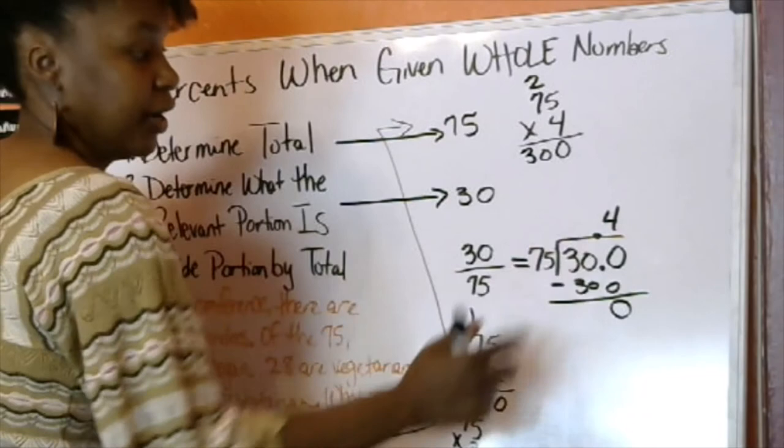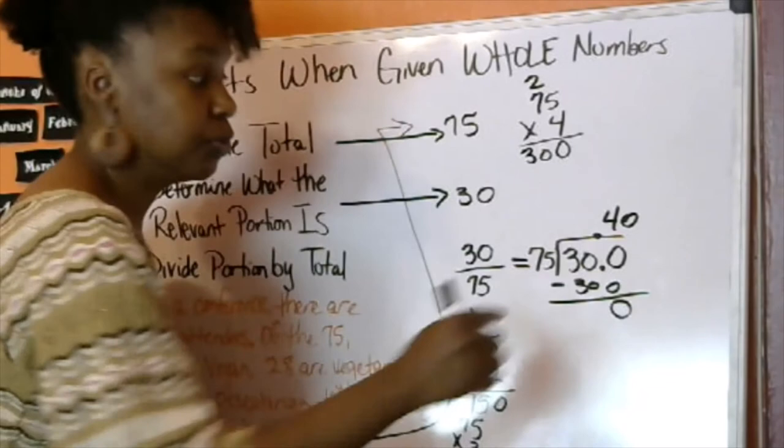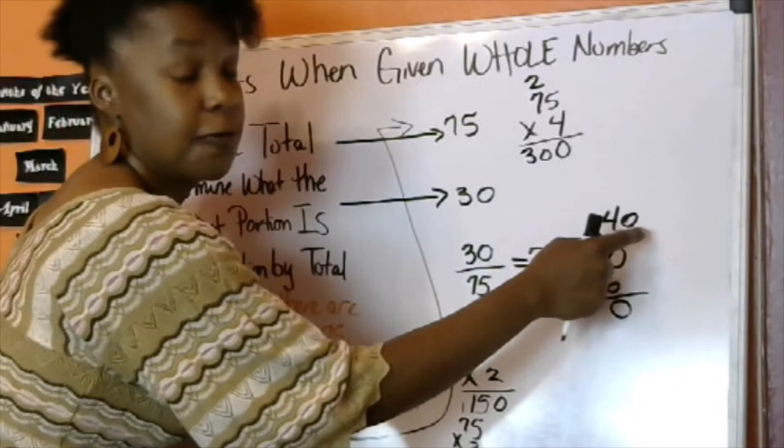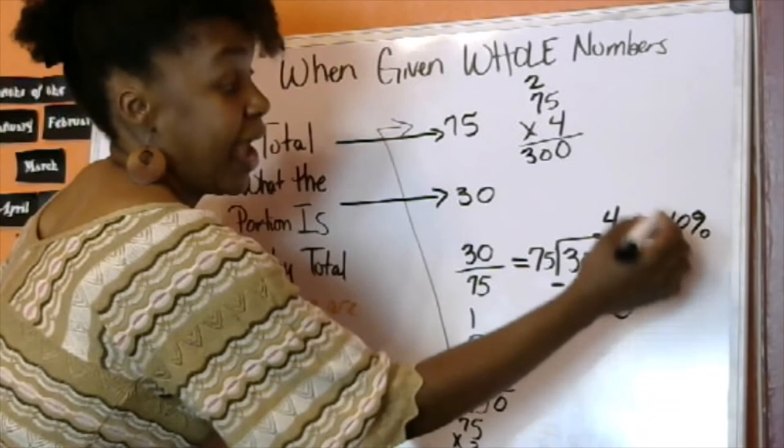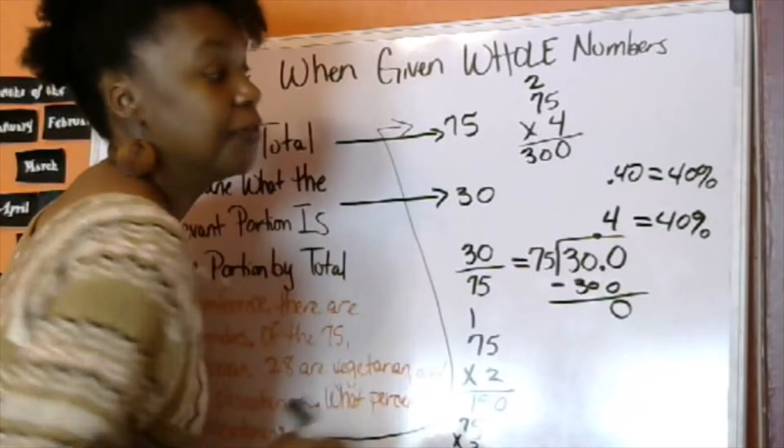You may add a 0 if you want, but you don't have to, because a 4 in the tenth place automatically makes this 40%, whether or not there's a zero. This is still 40%. If you add the 0, it'll still be 40%.